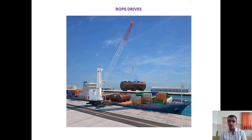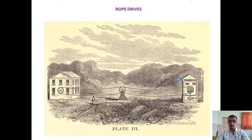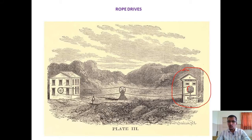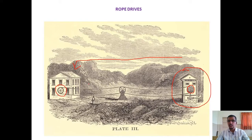Similarly, rope drives make use of a rope with pulleys attached. They are used when we want to transmit power over long distances. If the place of power generation uses a steam engine to rotate a driver pulley, the power is transmitted via rope to a driven pulley at a distant location. Wherever long distances are involved and we need to transmit power mechanically, we can make use of rope drives.